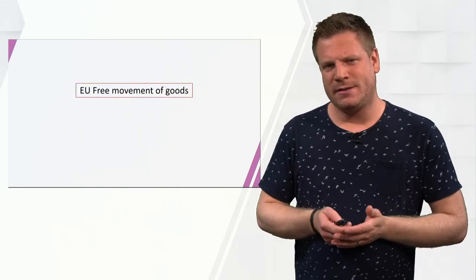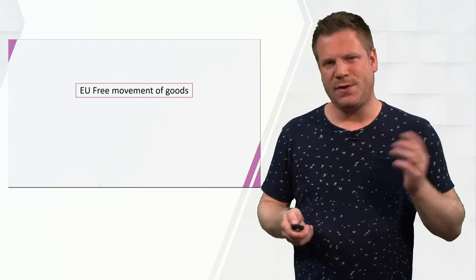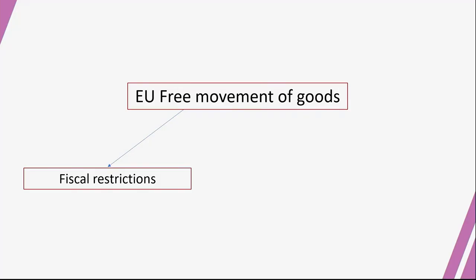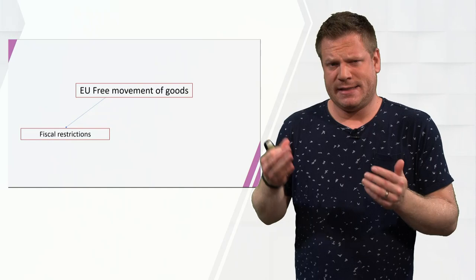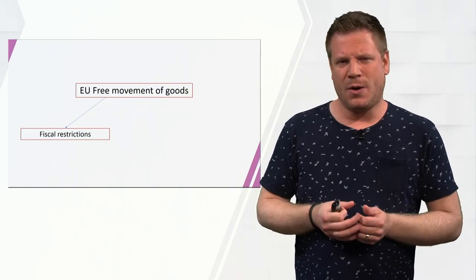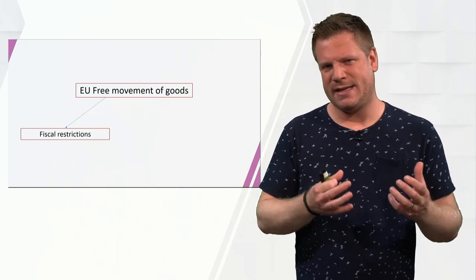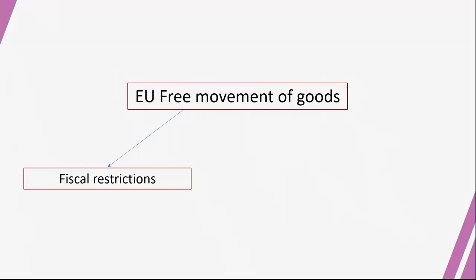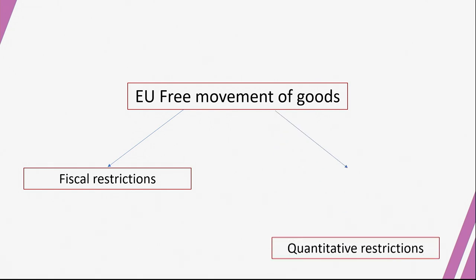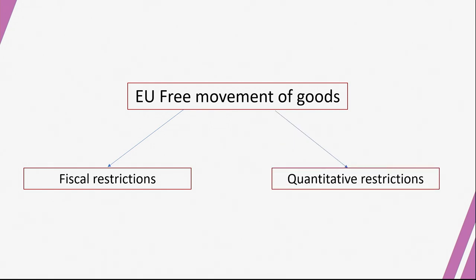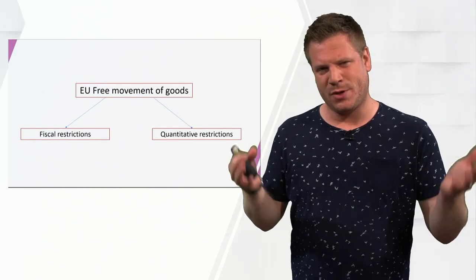This is predominantly done by two main ideas. The first is to get rid of all fiscal restrictions. A fiscal restriction means that one country upholds a financial restriction against another country, usually having something to do with tax. Another way is by getting rid of all quantitative restrictions. A quantitative restriction means that one country upholds a certain quota, or something that has a similar effect, against foreign products.